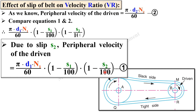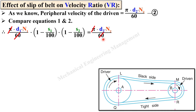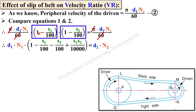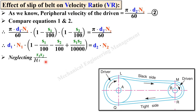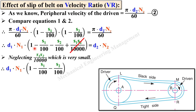We can write: (π·D1·N1 / 60) × (1 − S1/100) × (1 − S2/100) = π·D2·N2 / 60. Now π/60 cancels from both sides. The remaining term is D1·N1 multiplied by the two brackets. Multiplying these two brackets out gives a term S1·S2/10000, which is very small since S1/100 and S2/100 are both small values, so their product is nearly zero and we can neglect it.